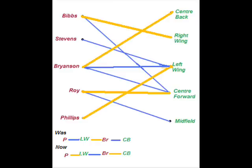Now notice what's happened at the bottom: the original state was blue, orange, blue in that little path, and now it goes orange, blue, orange — we've increased it by one orange. We can't actually do any better than that because both Stevens and Phillips insist on playing left wing only and we can't have two players playing left wing.